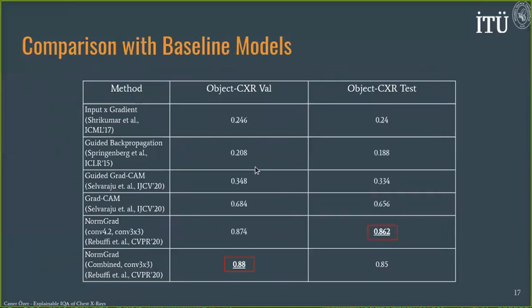We run a benchmark across six methodologies. We see notably poor performance from input times gradient and guided backpropagation, which can be attributed to their noisy spatial contribution patterns. The accuracy of guided GradCAM falls between guided backpropagation and GradCAM, as expected, since it is an element-wise combination of those two methods. Among all methods except NormGrad, GradCAM provides the most reliable saliency maps; however, as discussed earlier, it may be problematic when the model classifies images incorrectly. Both NormGrad methods demonstrate superior performance in the pointing gain benchmark compared to the baseline methods.